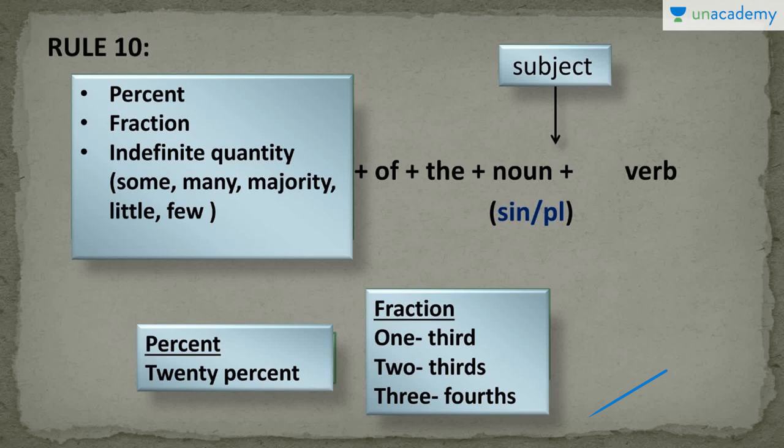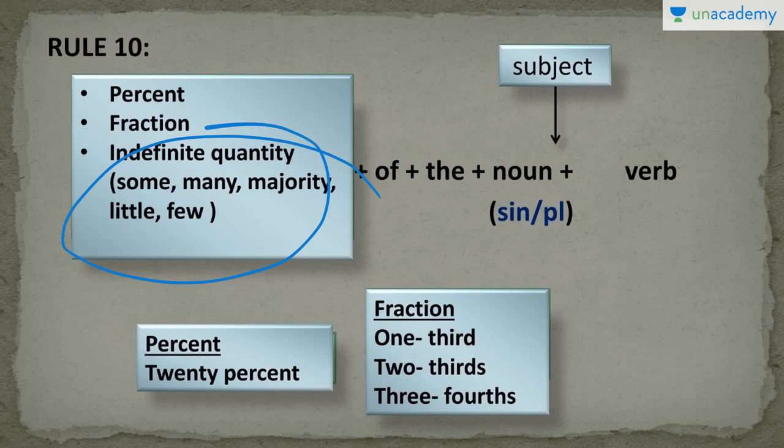Next is indefinite quantity. Indefinite means vague — not clearly expressed or not exact. And quantity means amount or number. So whenever you find a word which refers to amount or number but doesn't really express how much or how many, that is an indefinite quantity. For example, these are indefinite quantities: some, many, much, majority, little, few, etc. If I say 'some books,' that means I am talking about a number of books, but exactly how many I don't know. Hence, it is an indefinite quantity.